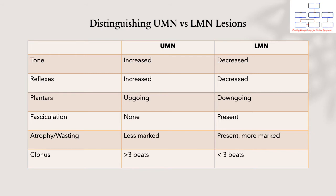Knowledge of basic neuroanatomy will be essential to understand why things present the way they are. Your reliable clinical findings such as tone, reflexes, planters, and fasciculations will be very useful in helping you distinguish the pattern. In upper motor neuron lesions you will find increased tone and reflexes, downgoing planters, and fasciculations.